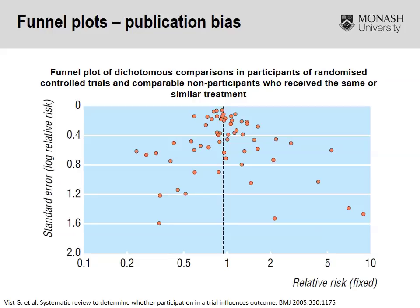A couple of things to focus on here: the first relates to the identification of studies. One bias we haven't discussed yet is publication bias. Publication bias means we want to identify all studies published on a particular topic, whether they demonstrate a positive outcome, no effect of the intervention, or a potentially harmful outcome. This is usually represented by what we call a funnel plot.